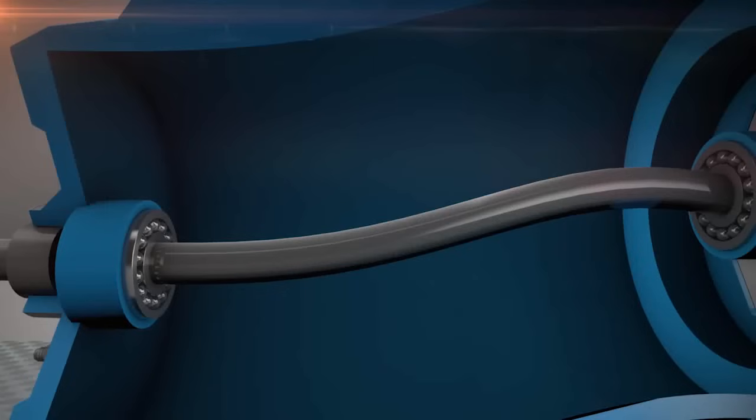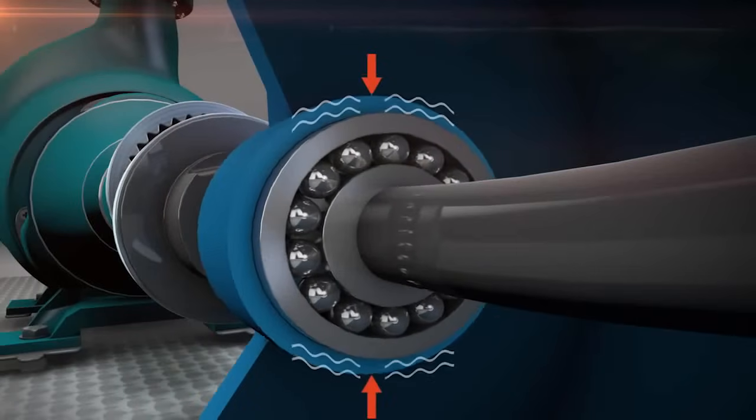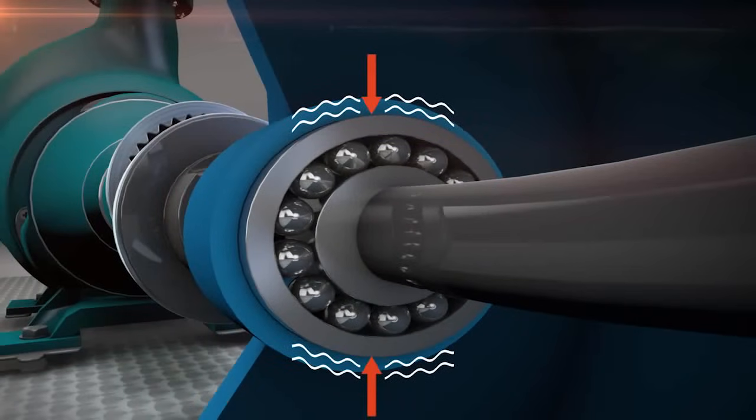Therefore, a soft foot condition creates two inflection points on the shaft, which produce vibration as the shaft rotates. The shaft doesn't like to be deflected, so it tries to straighten itself out. When it does,